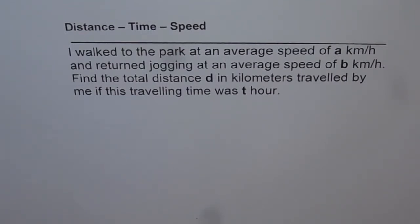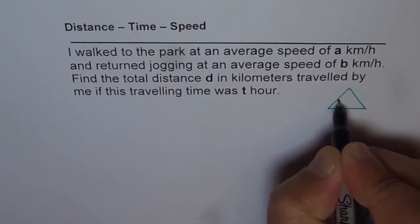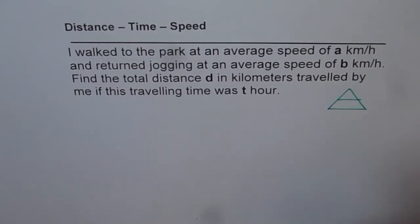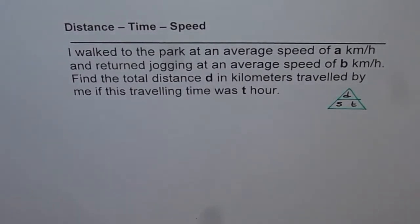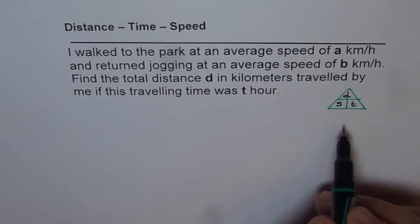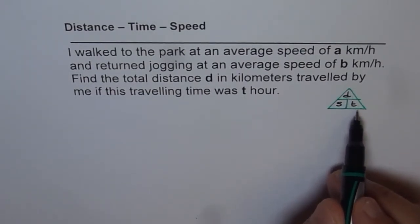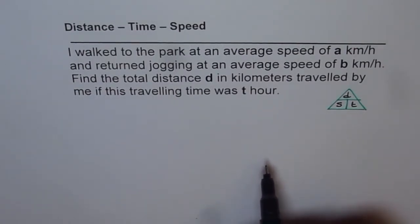Let us first remember the relation between distance, time and speed. Our triangle here relates distance, speed and time, in which distance D equals speed multiplied by time. Speed is the ratio of distance and time, and time is the ratio of distance and speed. We are going to use this relationship to understand this question.